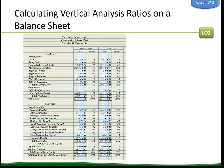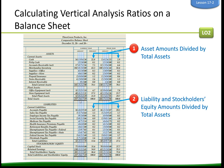Here is our balance sheet. All the asset amounts are divided by total assets, which is the 100% figure. Then the liability and stockholders' equity amounts are also divided by total assets — still total assets — because when we finish this sheet, total assets should equal total liabilities and stockholders' equity.